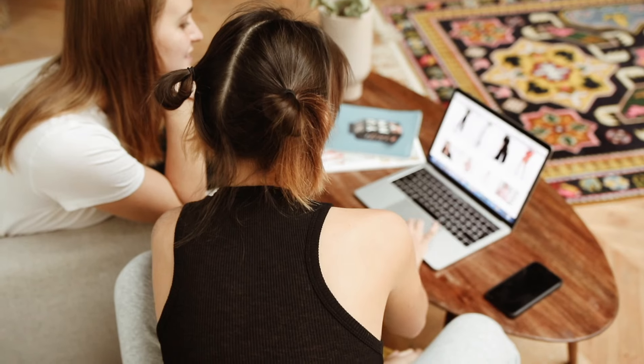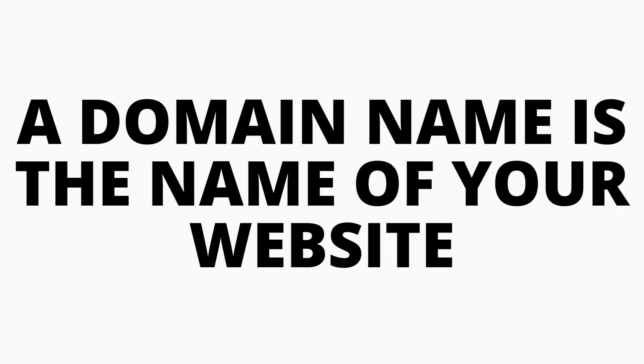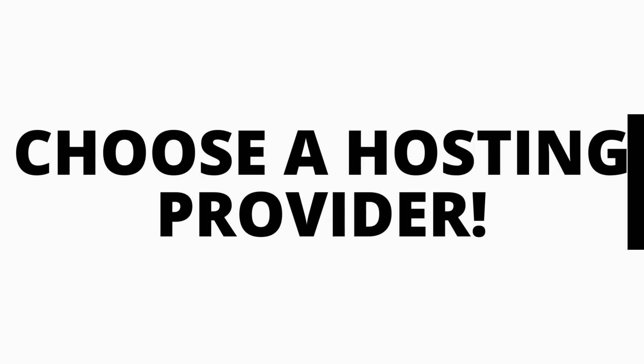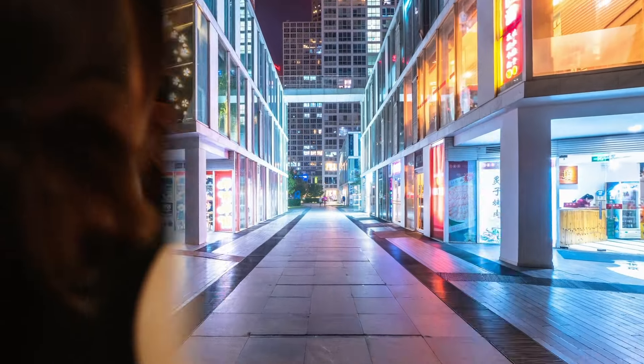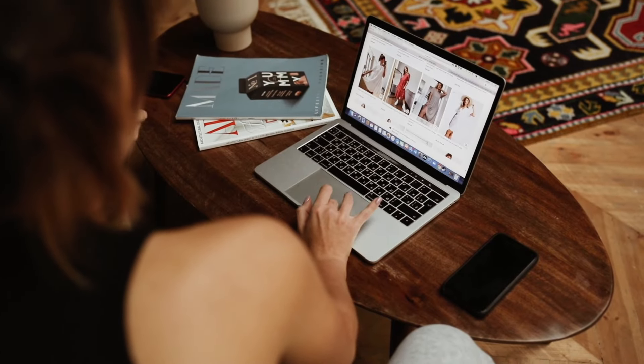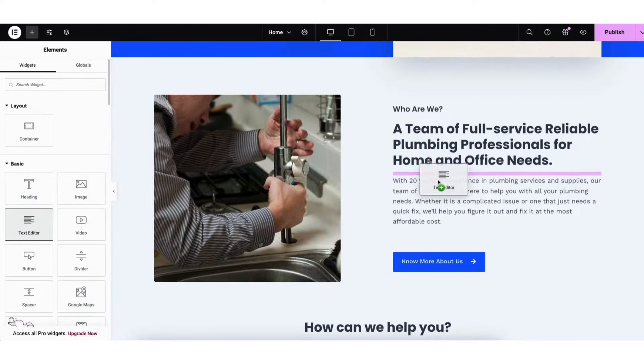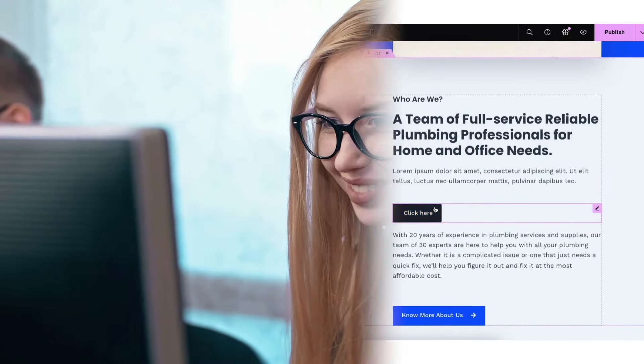At the end of this video, you will have your website for your local business successfully created. The first step I'm going to cover is how to choose and register your own domain name for free. A domain name is the name of your website — for example, youtube.com. Step 2 covers how to choose a hosting provider, which is like the physical storefront of your website. Step 3 is building your site with WordPress using professional pre-made templates and the most popular drag-and-drop editor.